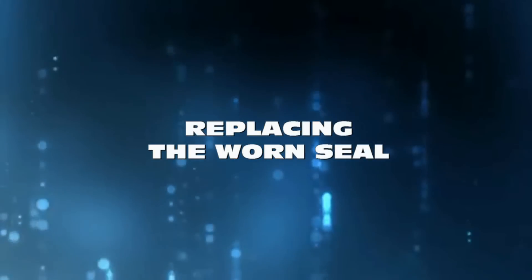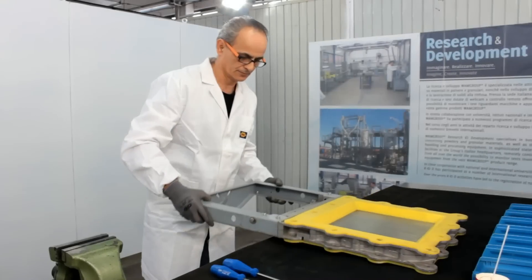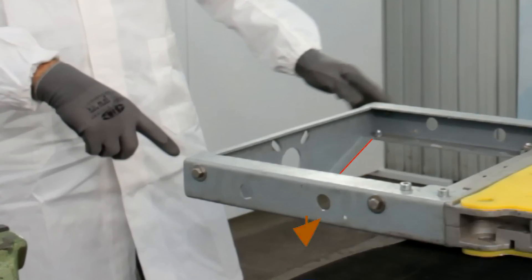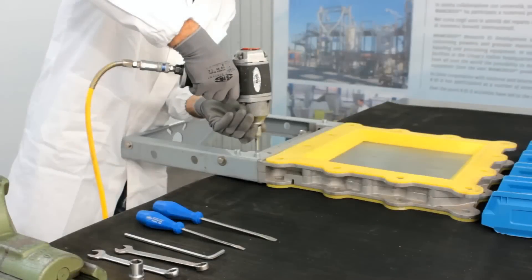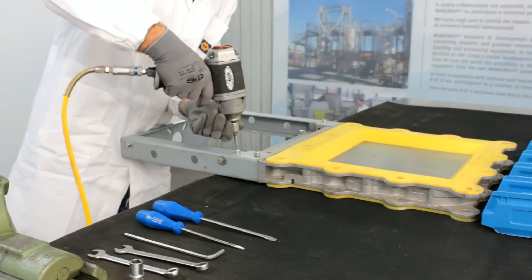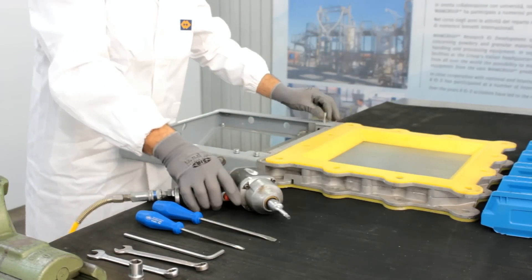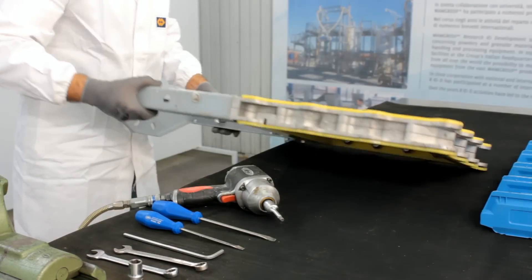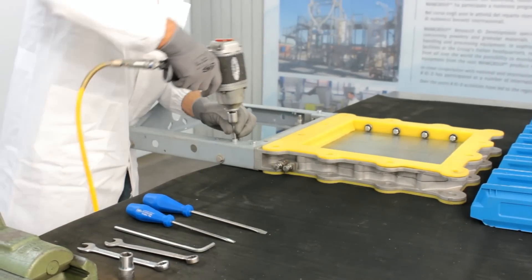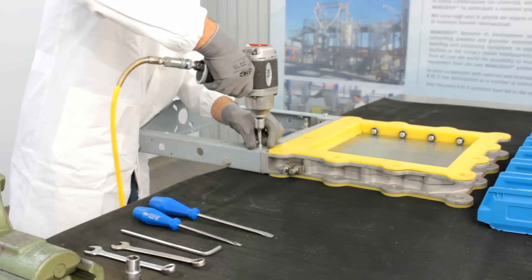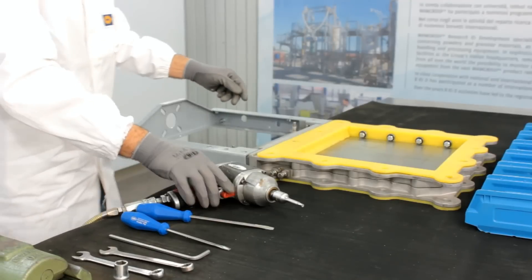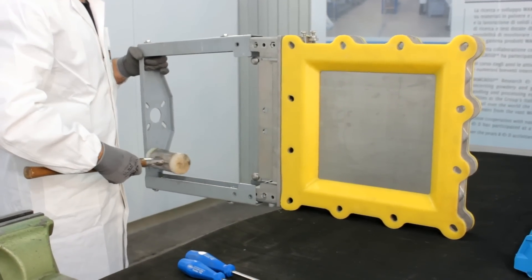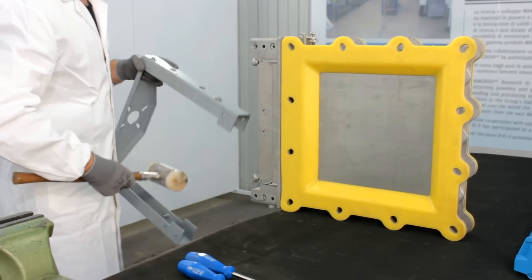Replacing the worn seal, position the valve with the flanged support downwards. Remove the drive side screws using a screw gun. Place the valve in vertical position to prevent the nuts from falling. Then slip the drive side out with a rubber hammer if needed.